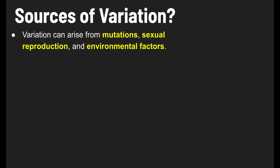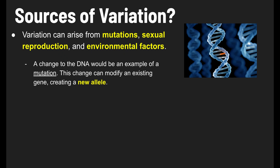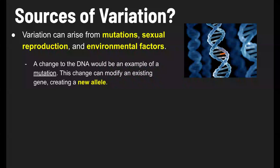Let's finish by talking about sources of variation. Variation can arise from three sources: mutations, sexual reproduction, and environmental factors. A change to the DNA would be an example of a mutation. This change to the DNA can modify an existing gene, and in changing the gene, it can create a new allele. The addition of that new allele is what adds variation to the population.